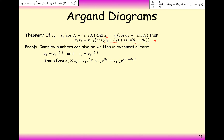When you multiply powers, you multiply the values at the front — R1 and R2 — and you add the indices together. That's why you add the arguments and multiply the moduli: because when multiplying exponentials, you add the index, so we add the arguments.